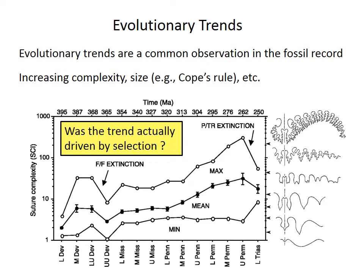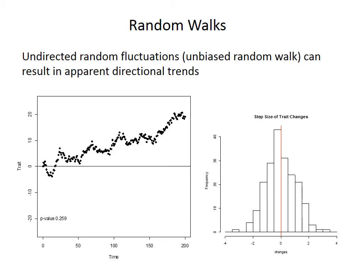What other possibilities are there? One option is something called a random walk. It's actually possible for unbiased random fluctuations — where the value for size or complexity is equally likely to increase or decrease — to produce an apparent trend. The example shown at the bottom was a simulation from a random walk. The histogram on the right-hand side shows that the simulated trait was equally likely to increase or decrease, and the left shows the resulting time series, which looks like a nice directional trend towards increasing values.